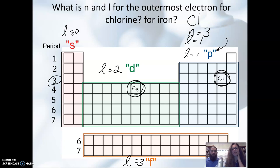And for iron, similarly, we're in the transition zone here, the transition metal zone, so it is n equals 4 minus 1, or 3. So n equals 3 for iron, for its outermost electron. We're in the D block, so L equals 2.